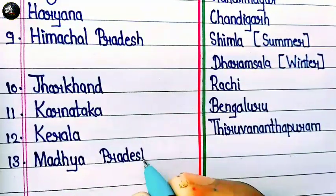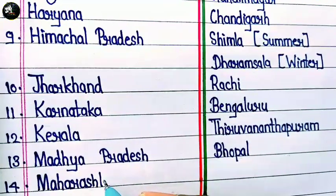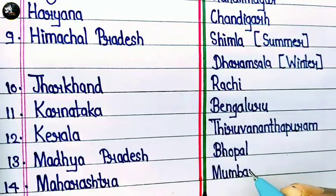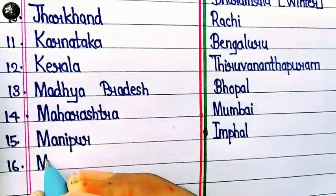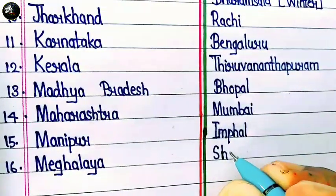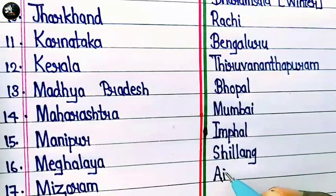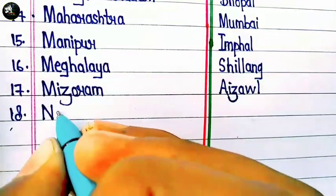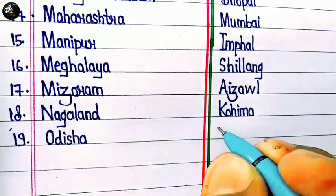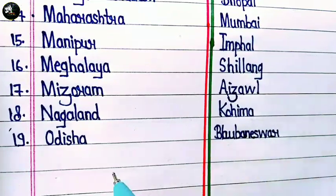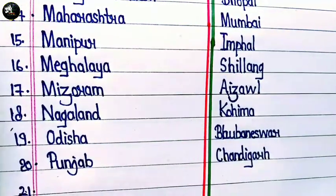Madhya Pradesh and the capital is Bhopal. Then Manipur. Then Meghalaya and their capital is Shillong. Then Mizoram. And then Nagaland and their capital is Kohima. And next is Odisha and their capital is Bhubaneswar.